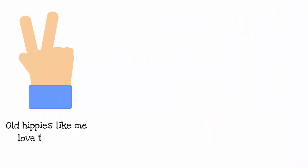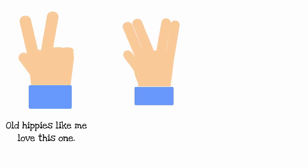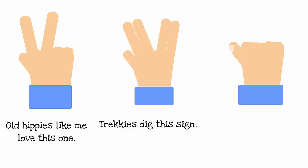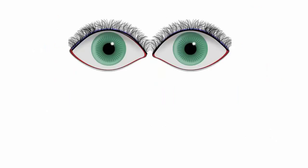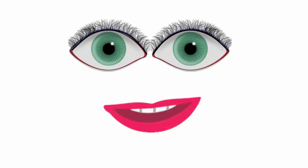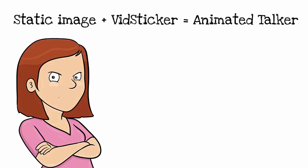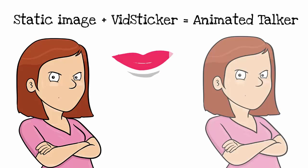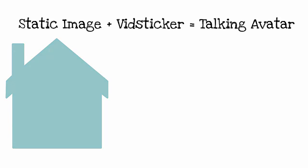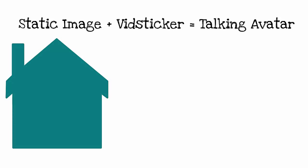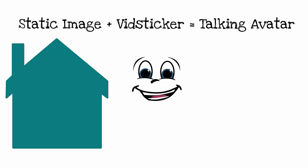The VidStickers upsell also has the most bad-ass collection of hand animations I've seen anywhere. I'll share a couple with you, but I'm saving my favorites for some new videos I'm planning. Ditto with the Talkers and Blinkers collection — there are lots of these and you can use them to transform static images into talking avatars and add a human element to some of your other images.